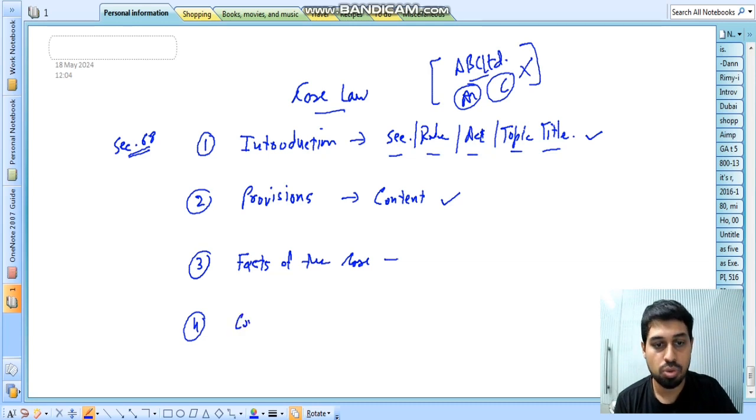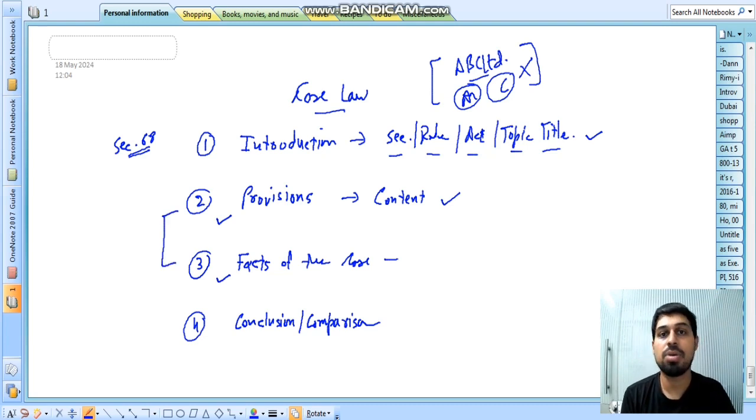The last part, we will explain the conclusion or comparison. Now, the conclusion and comparison is simple. This is happening in the act and case. There is something happening in the case. Now, we have compared them. Then we know what is wrong and what is right. So, there are some variations. What is the decision? What is the judgment? That is the comparison and conclusion.